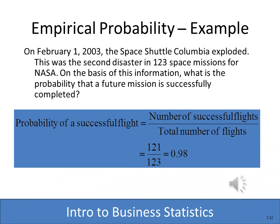Here's an example of empirical probability. There were two disasters with the space shuttle. On February 1, 2003, the space shuttle Columbia exploded. If we wanted to figure out, using empirical probability, the probability of a space shuttle being successful, we would look at 121 successful flights out of 123 total. So the probability of a successful flight using empirical probability is 0.98.